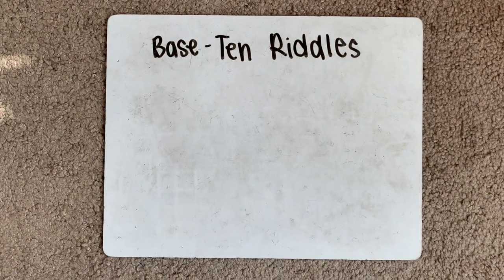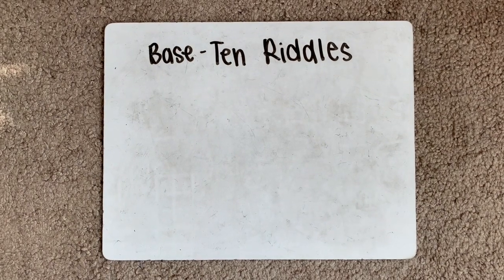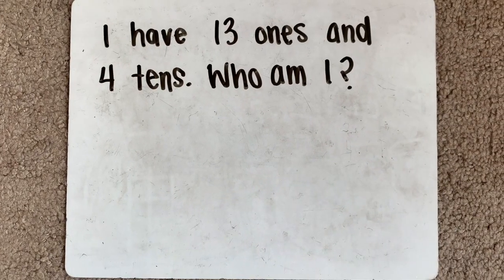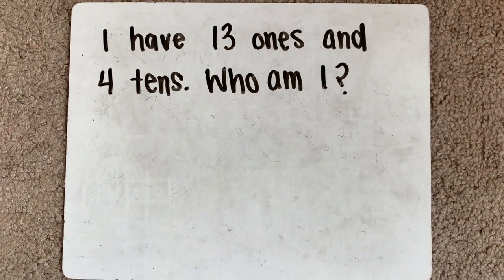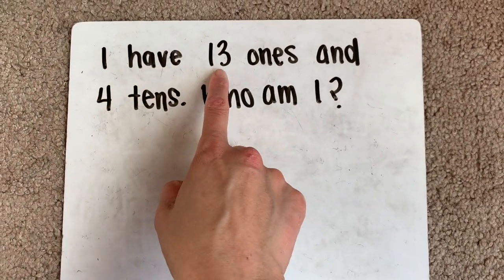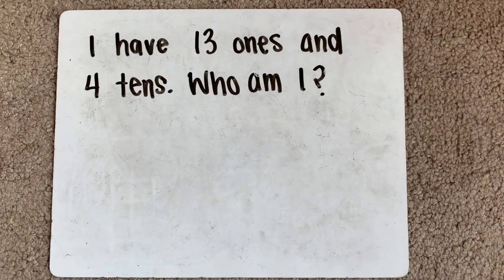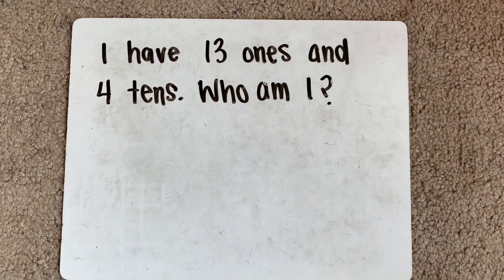We are going to be doing base 10 riddles together. Remember, riddles give you clues for you to solve the answer. For our riddles today, we are going to be guessing what number it is. So here's the first clue. We're going to find out which number has 13 ones and four tens. So let's build together.